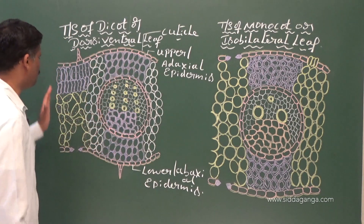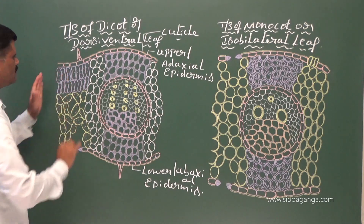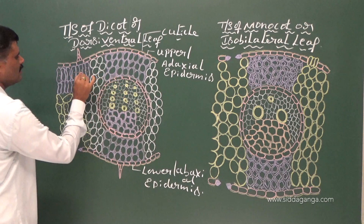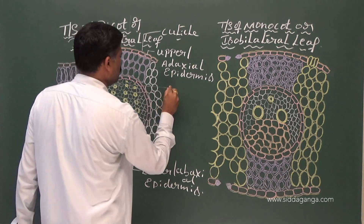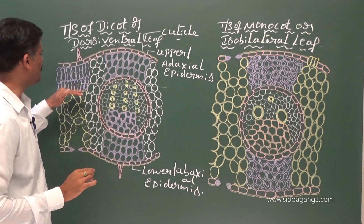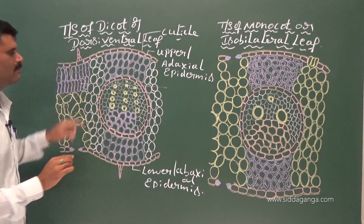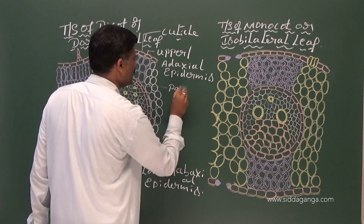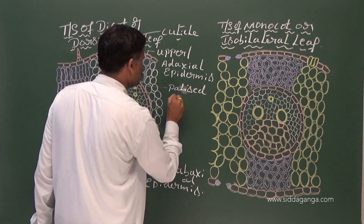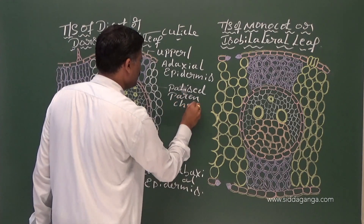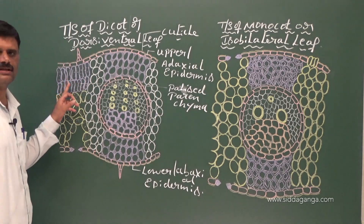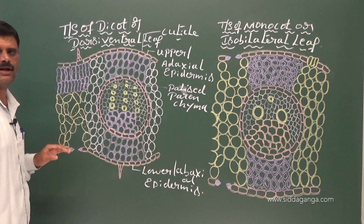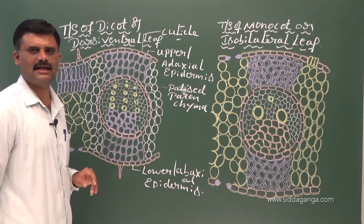The mesophyll region — the cells of the mesophyll region present towards the upper epidermis or adaxial surface — is called palisade parenchyma. The mesophyll region which consists of cells present towards the upper or adaxial surface is called palisade parenchyma.